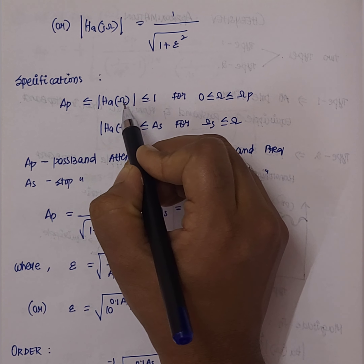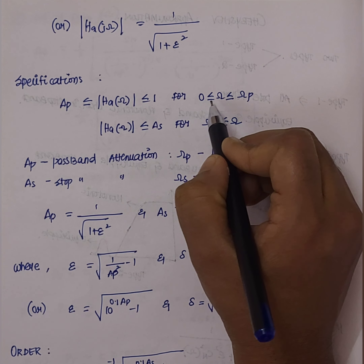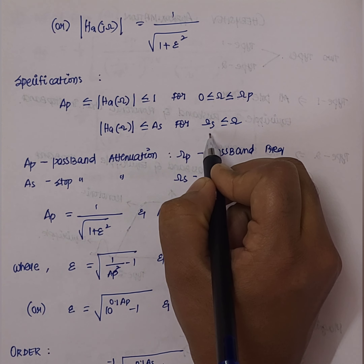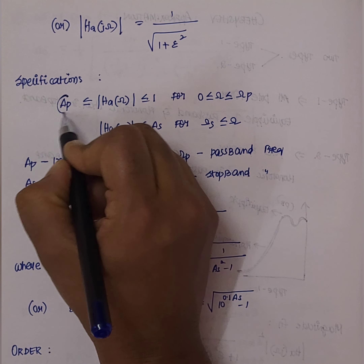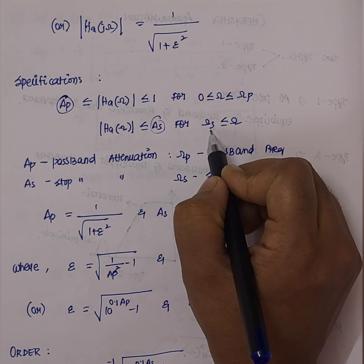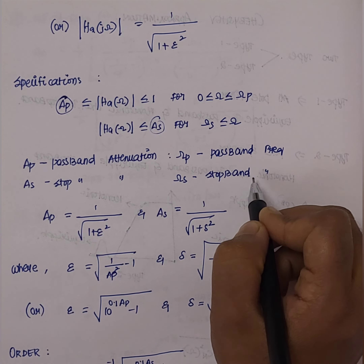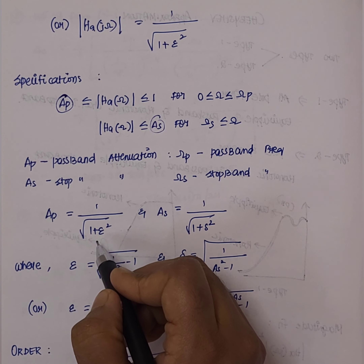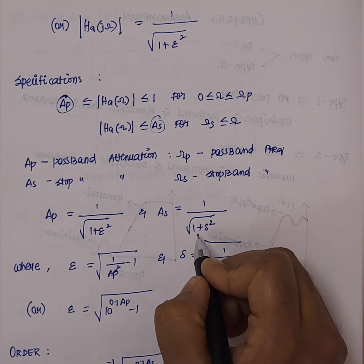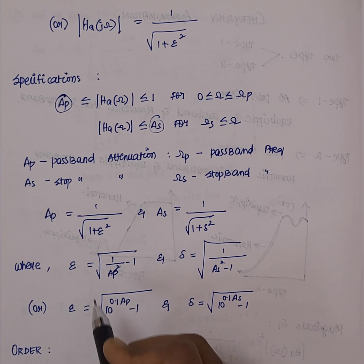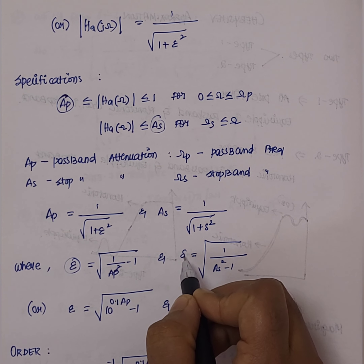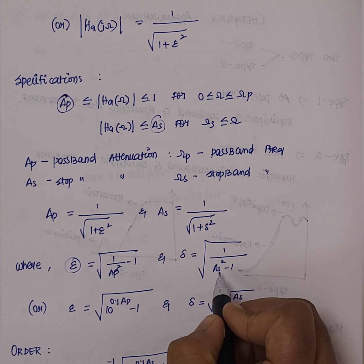The pass band condition is: a_p is less than or equal to H_a(omega) is less than or equal to 1, for 0 less than omega less than omega_p. In the stop band, we have a corresponding equation. Here, a_p and a_s are the pass band and stop band attenuation values, and omega_p and omega_s are the pass band and stop band frequencies. The ripple parameters are given by 1 over square root of 1 plus epsilon squared and 1 over square root of 1 plus delta squared.